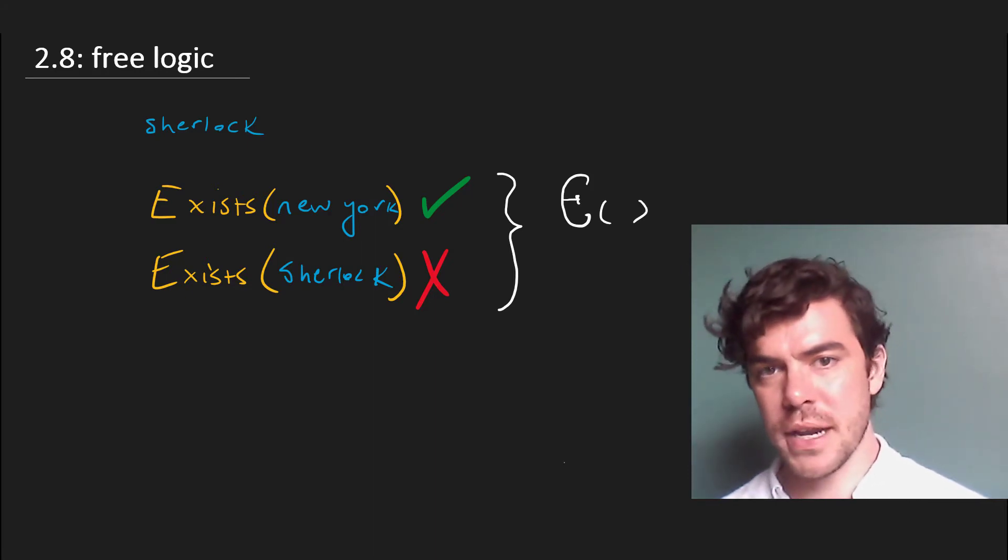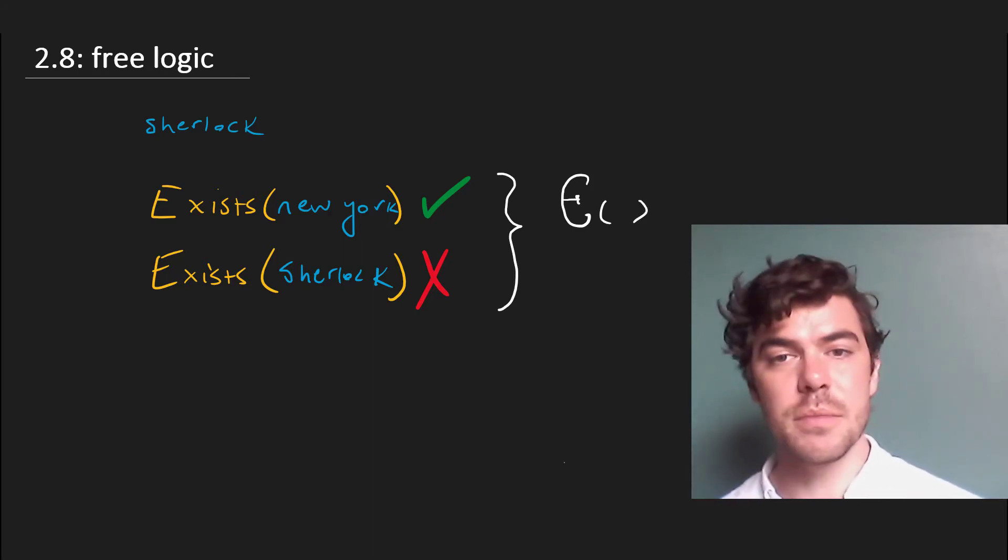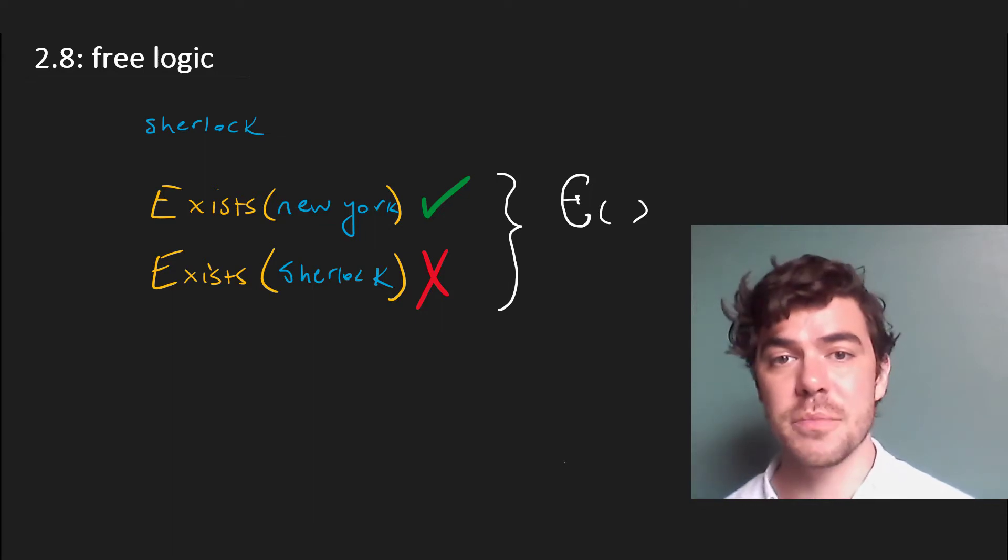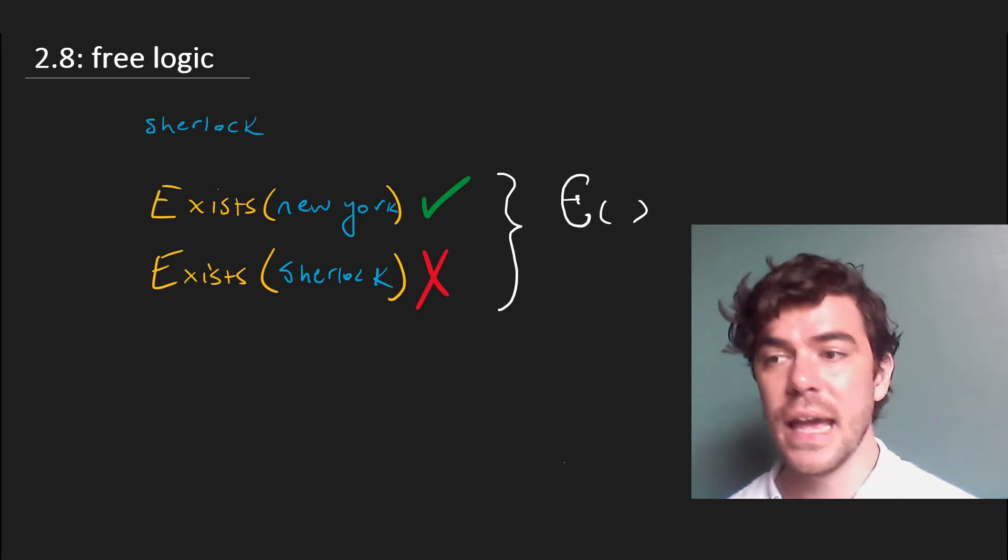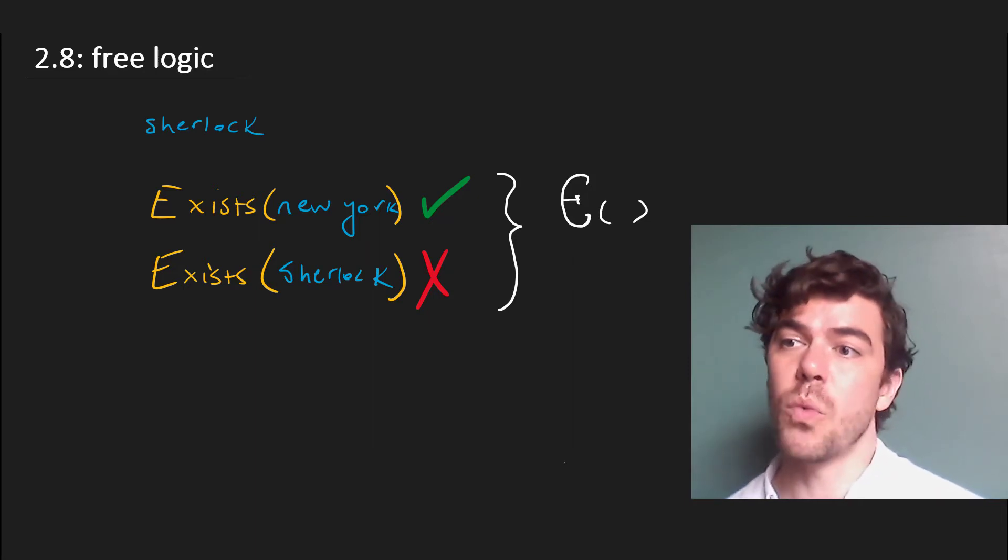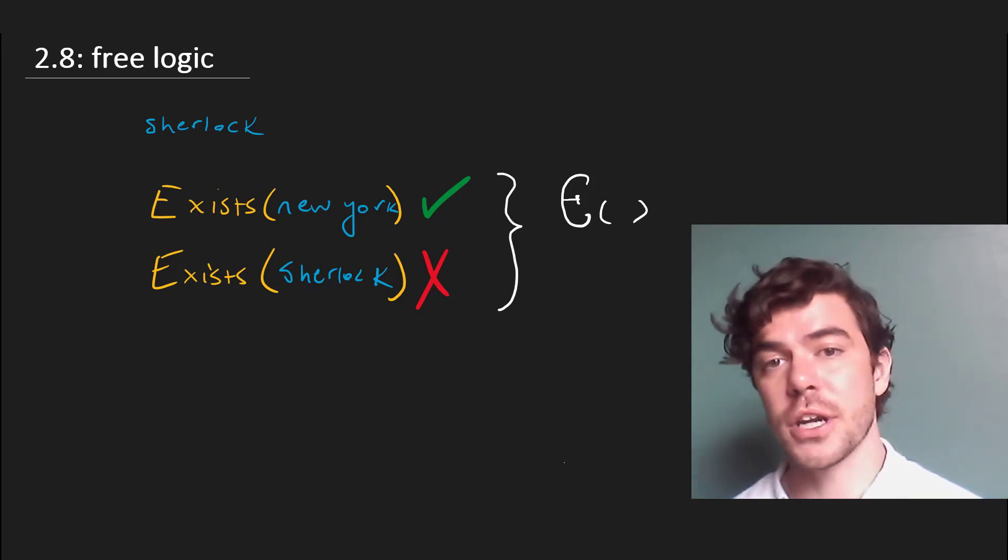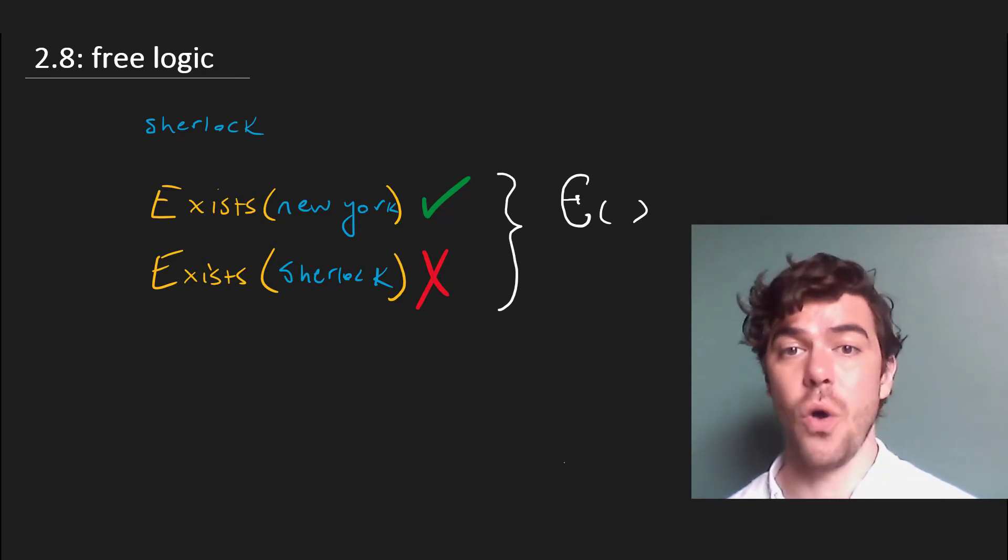Including an existence predicate might seem like not a very big deal, but actually some major debates turn on whether or not existence can be read as a predicate in this way. And it's generally thought that at least one significant historical argument for the existence of God turns on whether or not existence can be treated as a predicate at all.